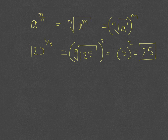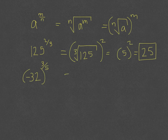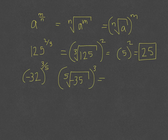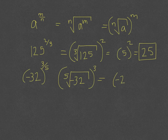For negative 32 to the 3/5 power, it's easiest to take the root first to make the number smaller before increasing the power. So we take the fifth root of negative 32, which is negative 2, and then negative 2 cubed gives us negative 8.